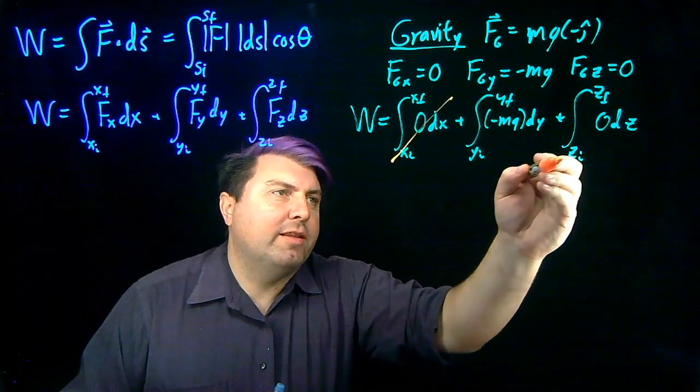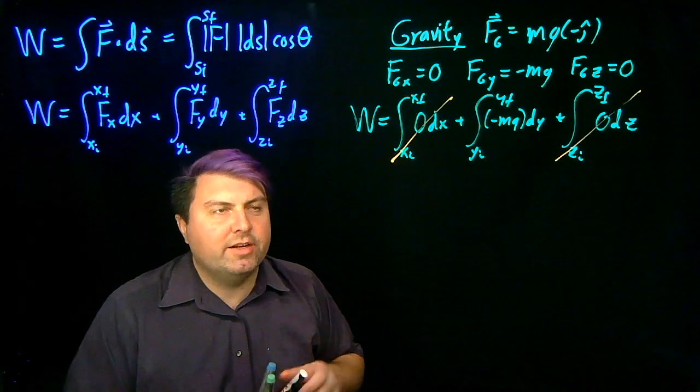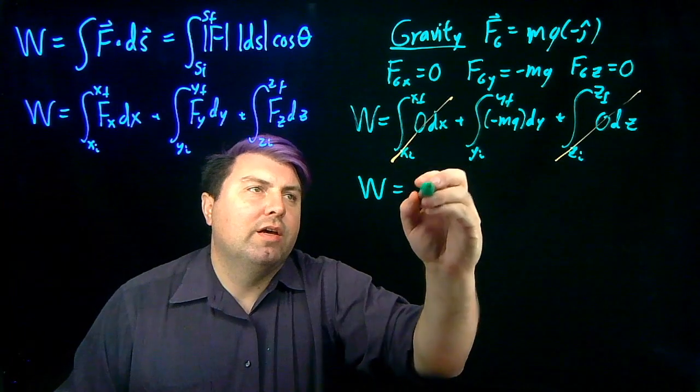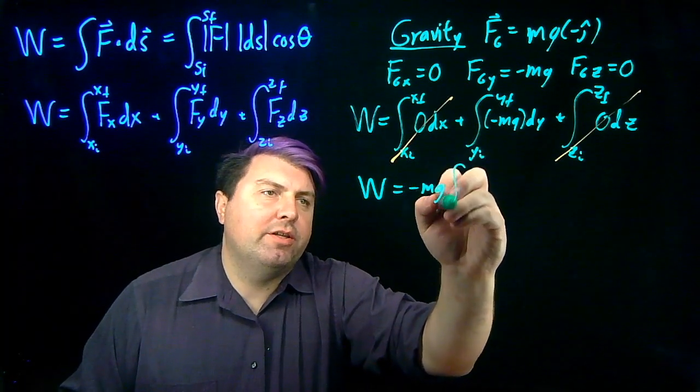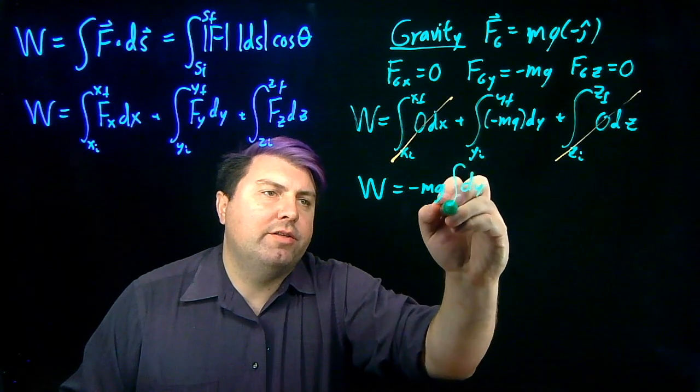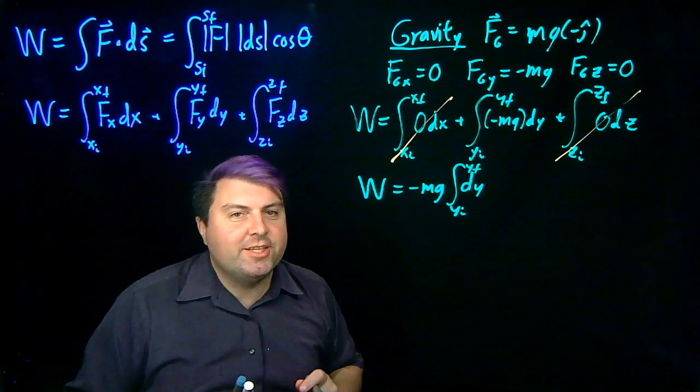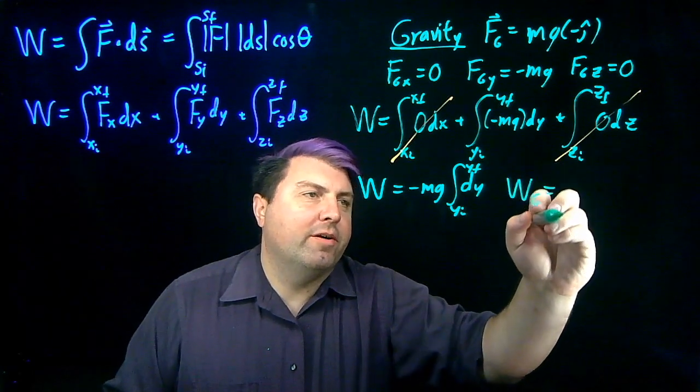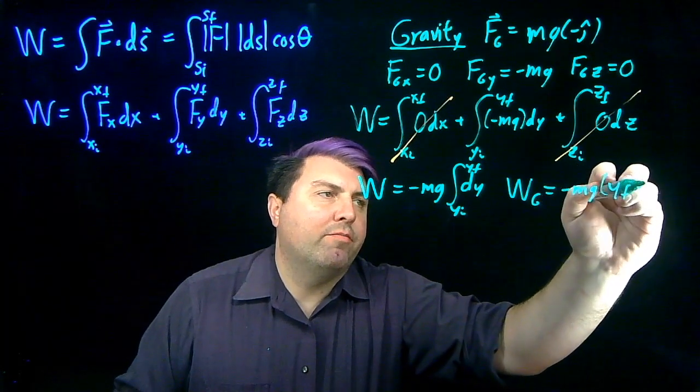And same, right, the definite integral of zero is zero. So we get two zeros right here. And our work then, we can pull this negative mg out. So we have negative mg, the integral of dy from yi to yf. And this is about as easy of an integral as we can get, which gives us that our work from our gravity is negative mg times yf minus yi.